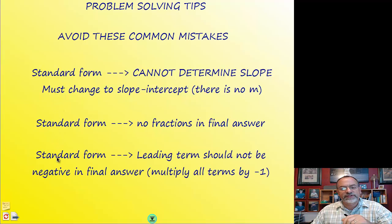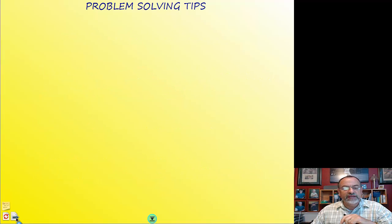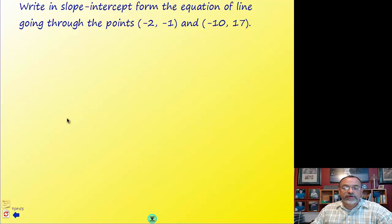And then we talked about a couple of conventions, making sure that there aren't any fractions in our final answer when it's in standard form. So let me go ahead and do an example for you. Here we're given two points, and we're asked to write in slope-intercept form the equation of a line that goes through these two points.